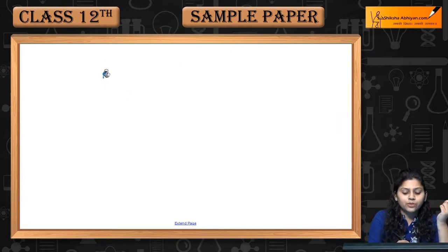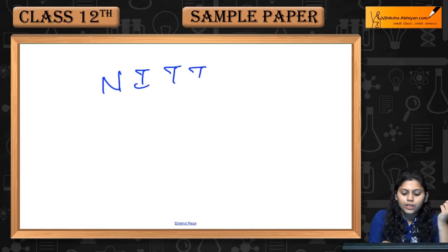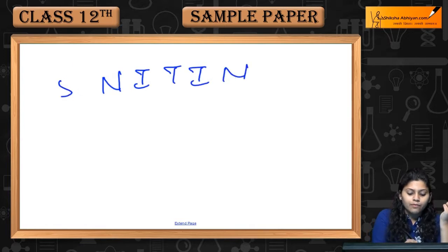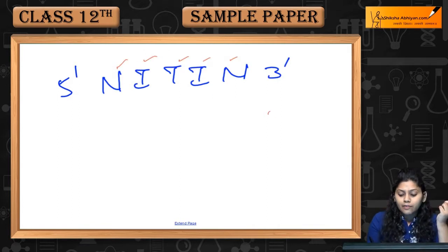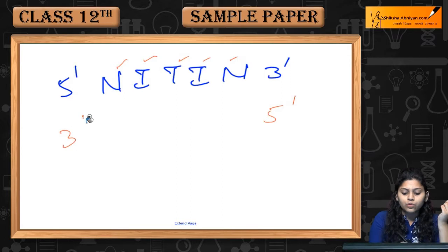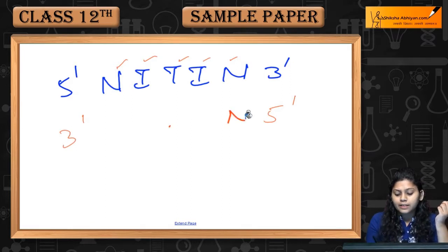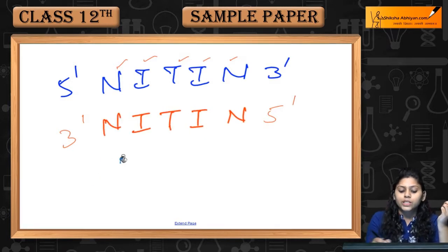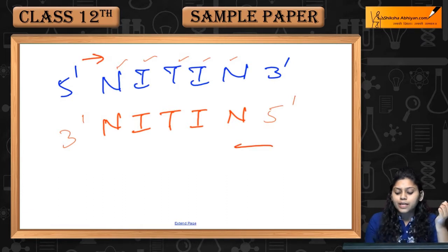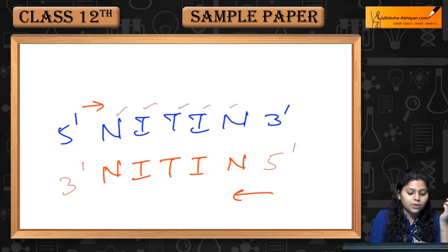One of the palindromic names is Nitin. If you read from any side — 5' to 3' — it's N-I-T-I-N. आप इस side से study करोगे, then it's also N-I-T-I-N. This is a palindromic sequence — आप दोनों में से किसी भी side से read करोगे, same sequence है।